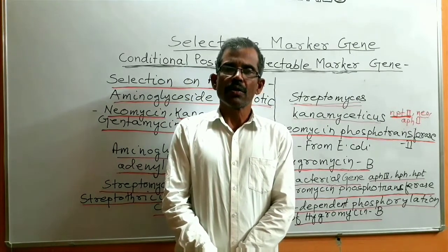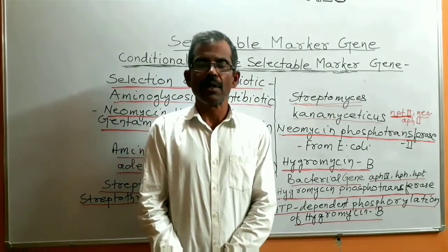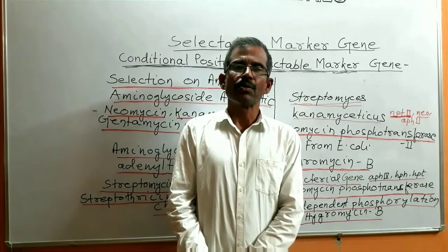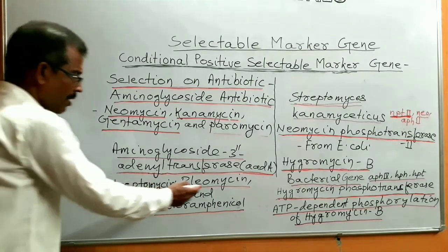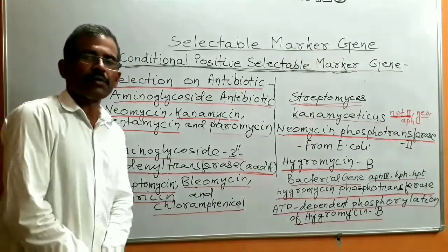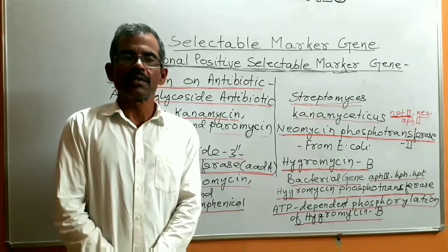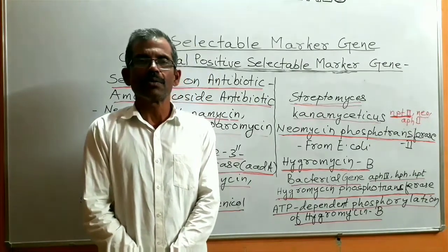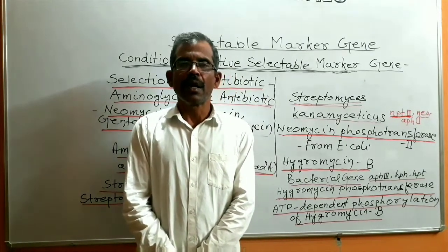Hygromycin is more toxic, so it is not possible to apply hygromycin B without an overkill effect. In addition to kanamycin and hygromycin B, several antibiotics like streptomycin, bleomycin, streptothricin, and chloramphenicol can also be used as selective agents along with their corresponding resistance genes to select transgenic plants.